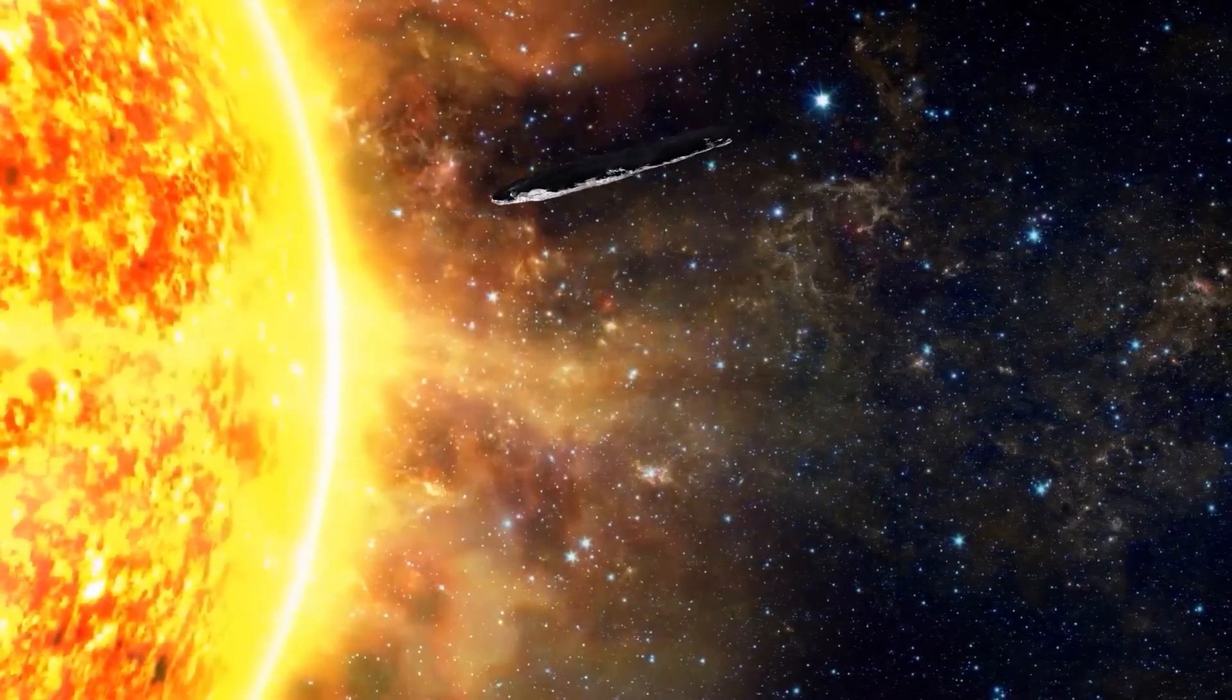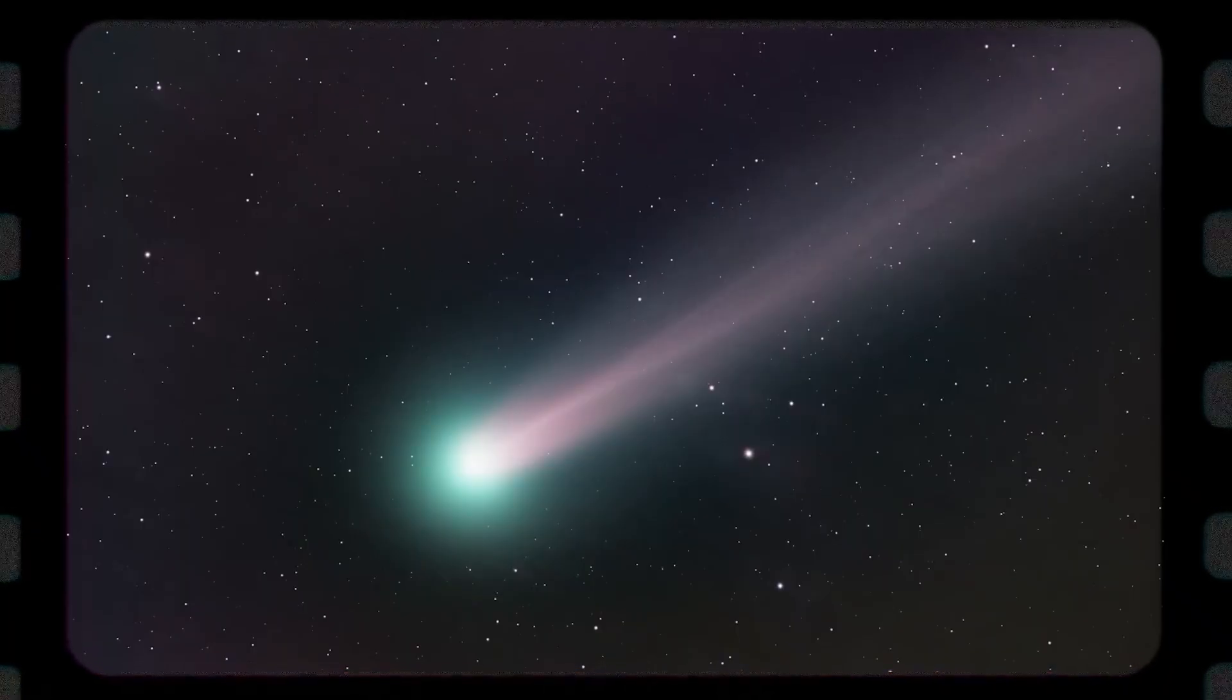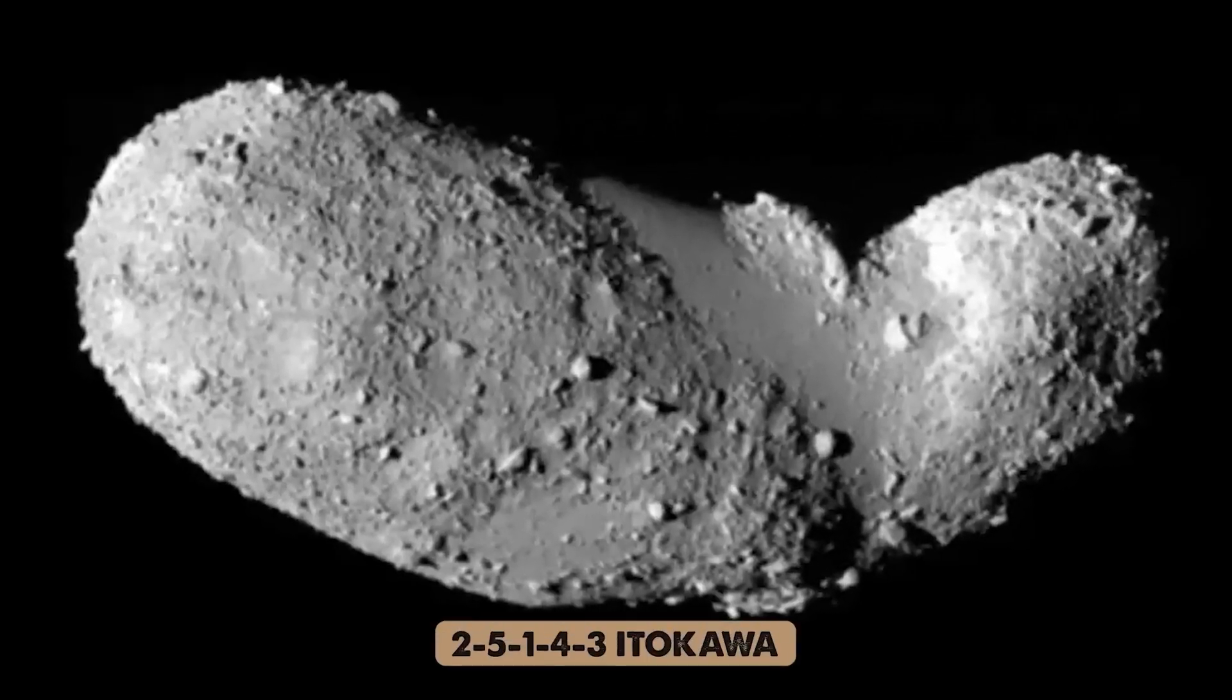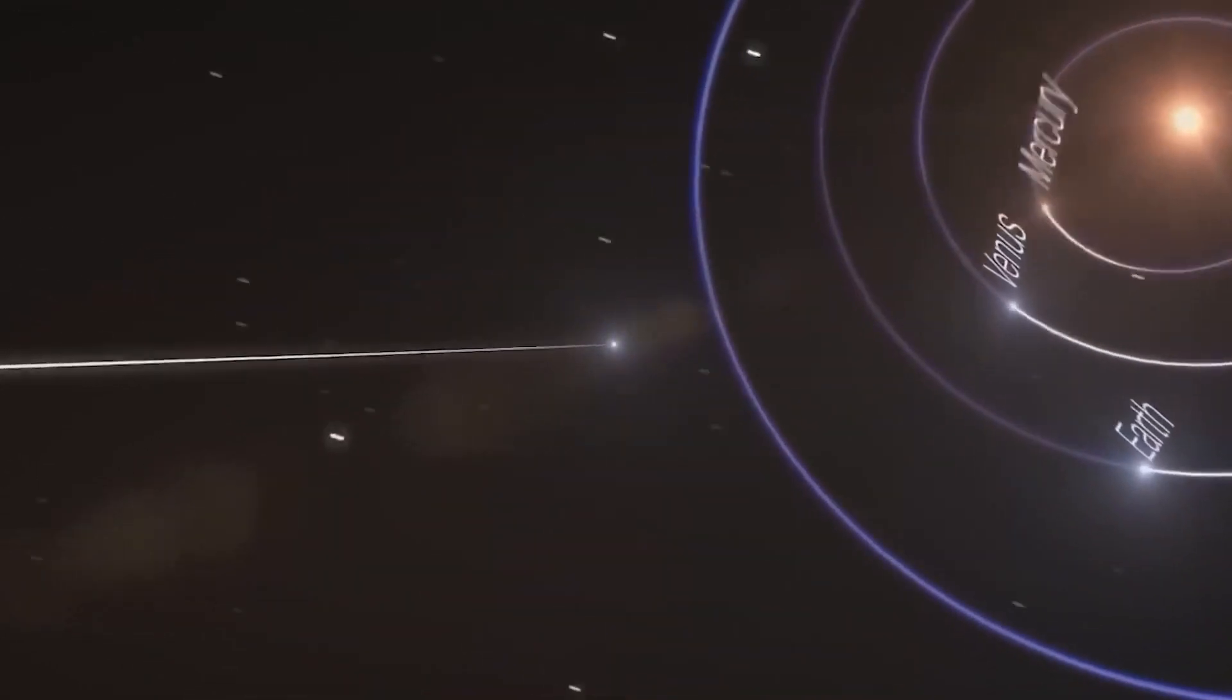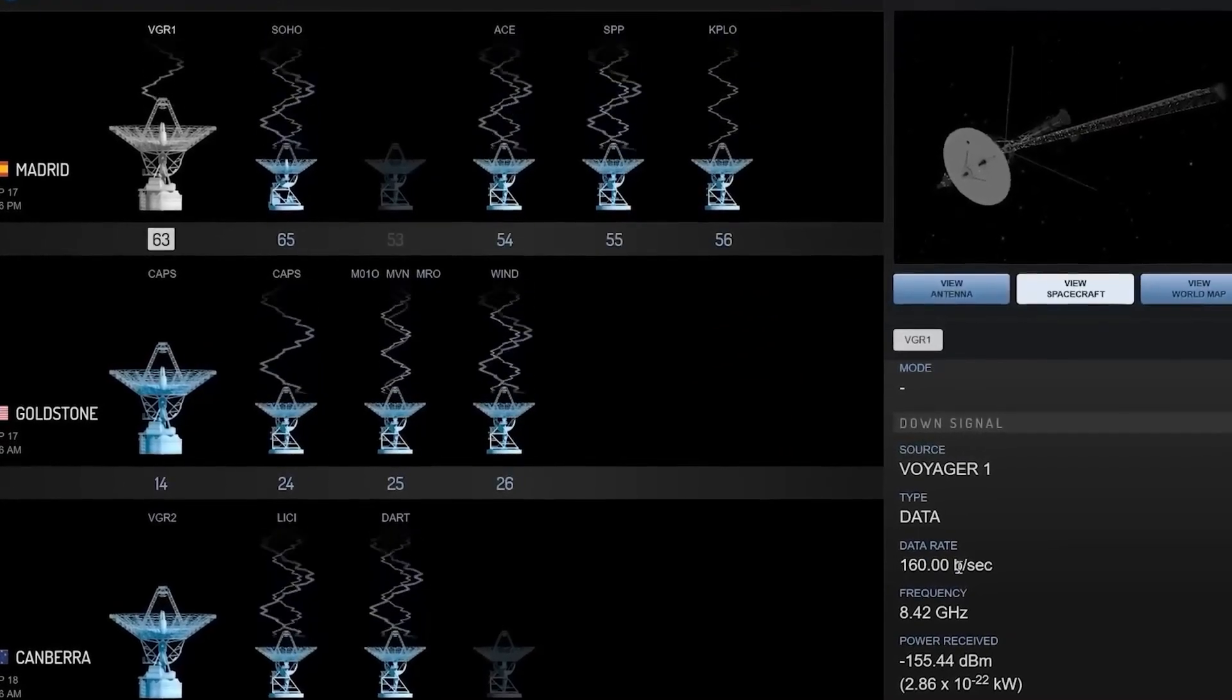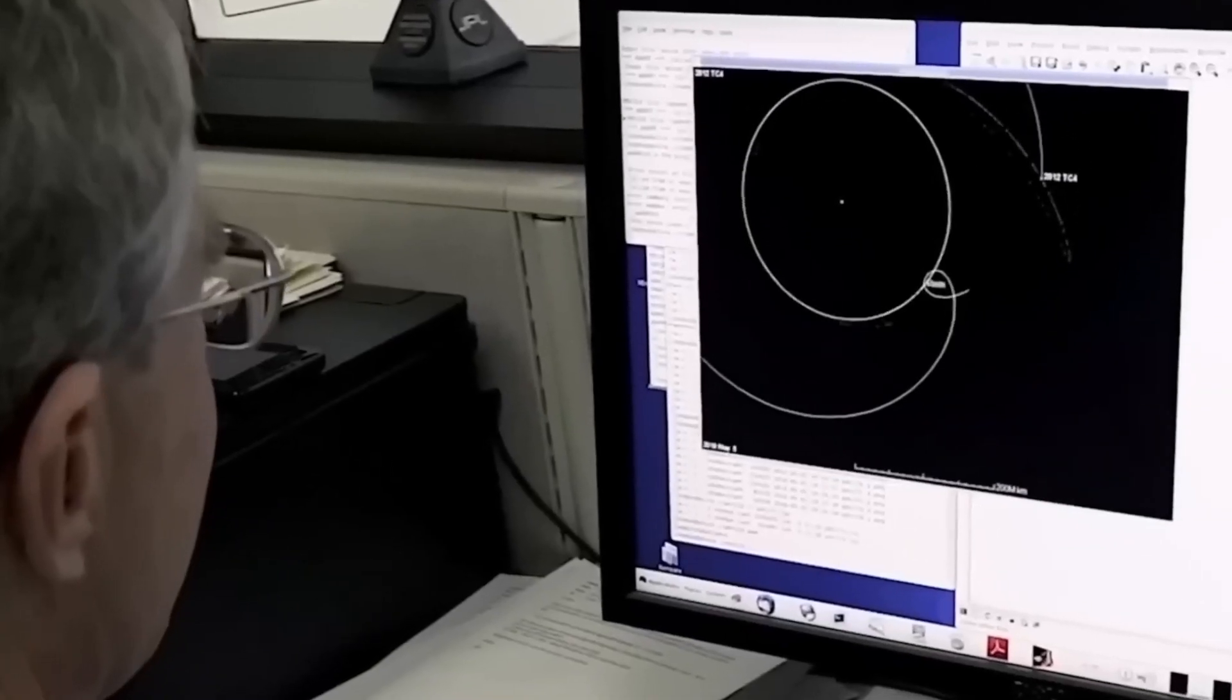In science, there's a principle called Occam's razor, which suggests that the simplest explanation is often the most probable. Applying this principle to Oumuamua, it's more likely that it's a natural, albeit peculiar, object rather than an extraterrestrial craft. To delve deeper into the mystery surrounding Oumuamua's origin and properties, scientists turn to advanced computer simulations and modeling. By meticulously analyzing the available data and running various simulations, researchers aim to recreate and comprehend Oumuamua's trajectory and behavior. These simulations provided invaluable insights into the potential composition, shape, and origins of the object.